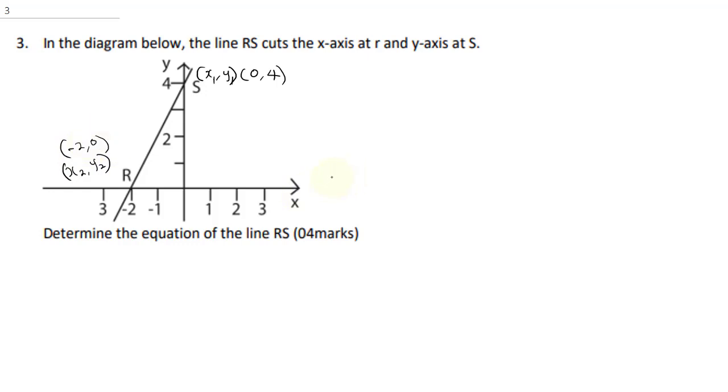So for us to determine the equation of the line, you know that the equation of line is equal to y is equal to mx plus c, where m is our slope. So, let's get our slope. Where our m is supposed to be change in y, y2 minus y1 over x2 minus x1. Now, our y2 is 0 minus 4, and our x2 is minus 2 minus 0. This is going to give us, our m is going to be minus 4 over minus 2, and that will give us 2.